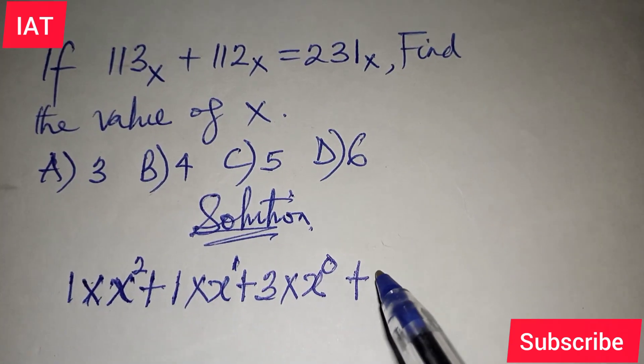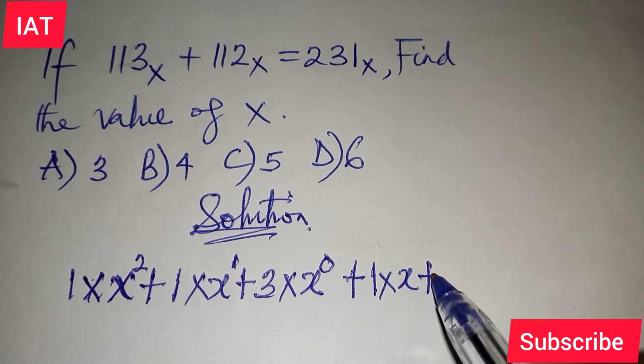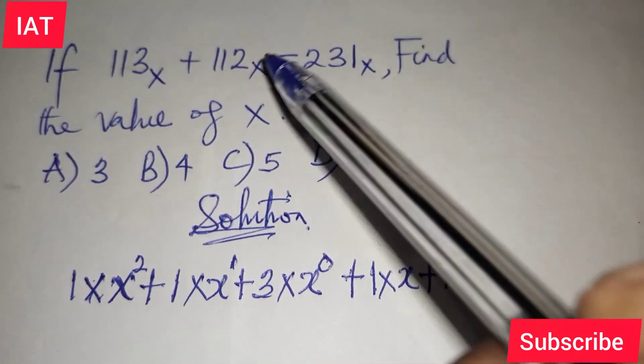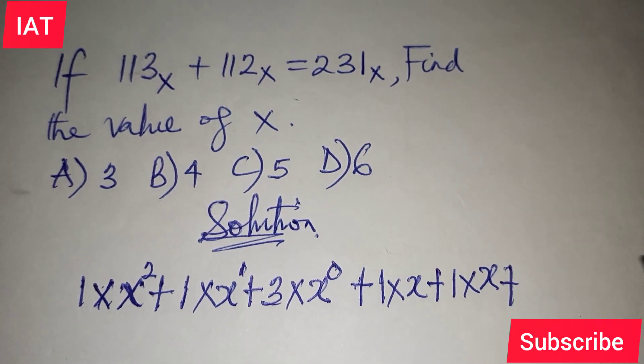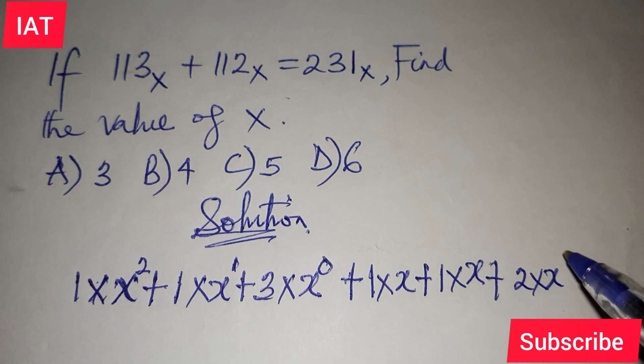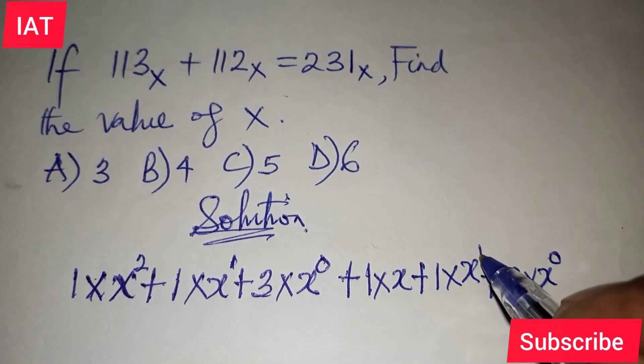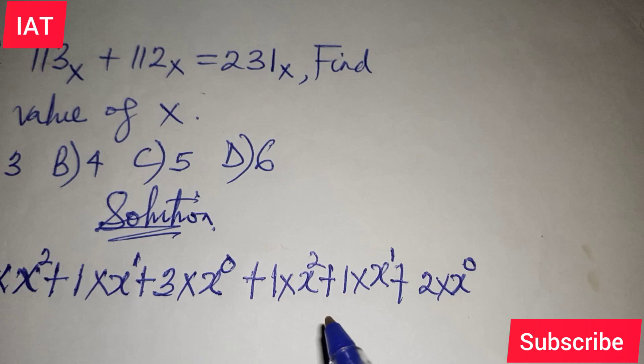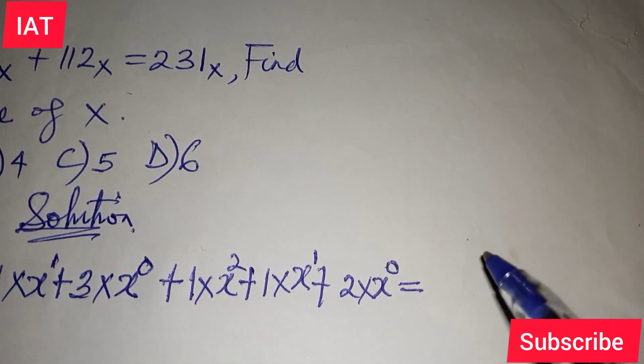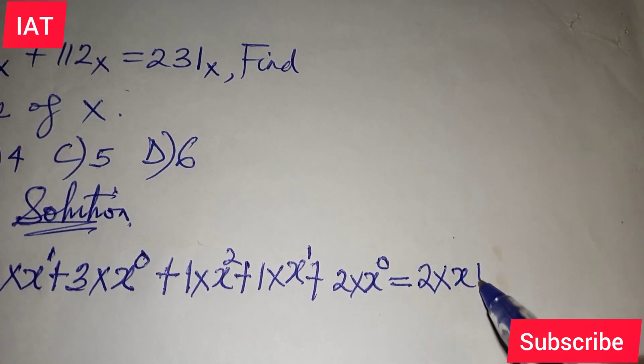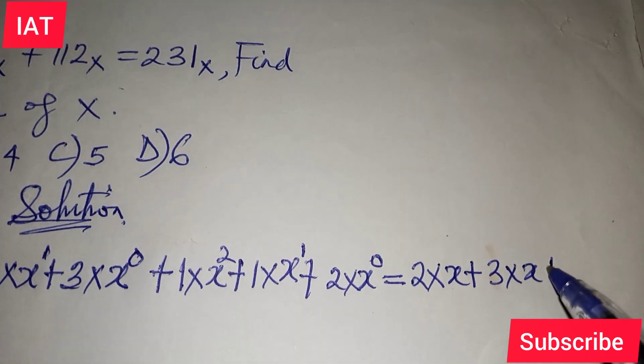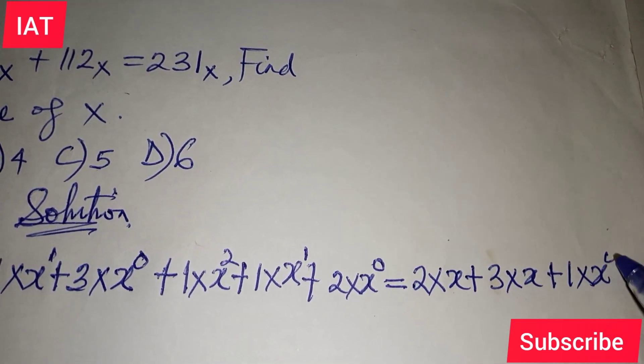The next thing I have is 2 multiplied by X plus 3 multiplied by X plus 1 multiplied by X. I'll have here 0, 1, 2. You're counting from the right to the left, starting from 0.